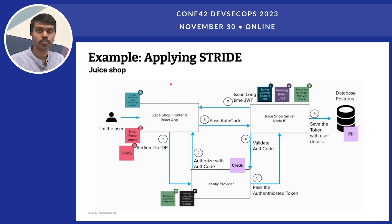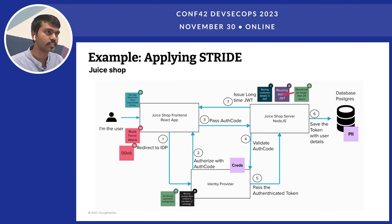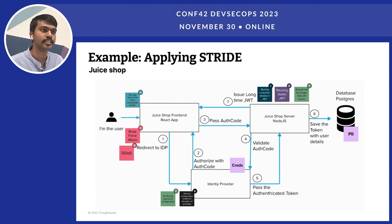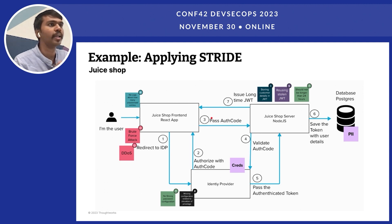Now we apply the STRIDE model on our Juice Shop guinea pig. After applying it, we come up with several threats: jeopardizing repudiation — there are no logs for unauthorized login attempts; there can be a brute-force attack; there can be a distributed denial of service; tampering — there is no strong password configuration; and there is a missing configuration related to elevation of privilege. These are the threats identified after applying the STRIDE model.